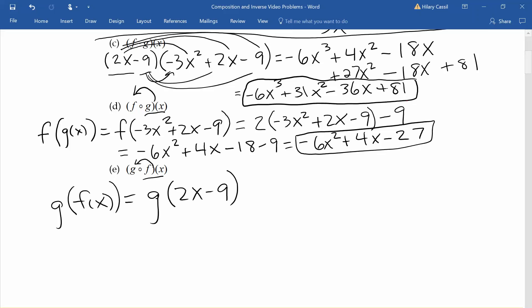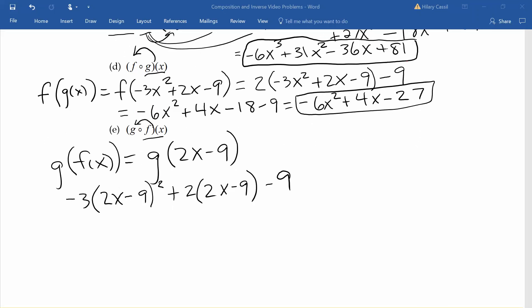Initially, this is going to read negative 3 times 2x minus 9 squared plus 2 times 2x minus 9 minus 9. The first thing we need to do is foil with this first parentheses, and we will distribute for our second parentheses.